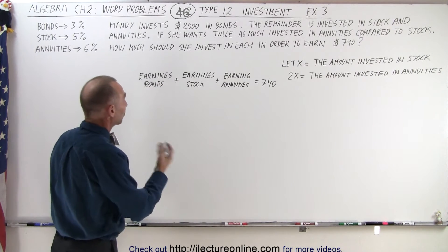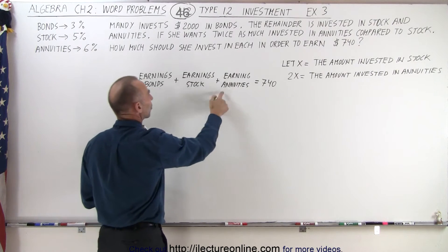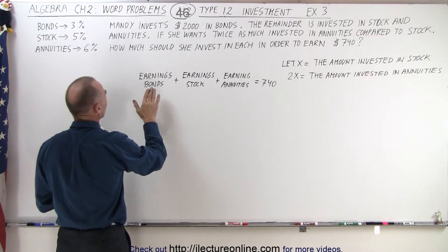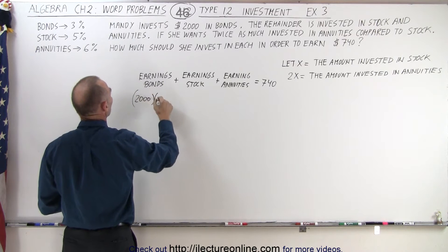So now the question is, how much in each? Well, let's now express these three things in terms of X. So the amount earning from bonds will be the amount invested times the rate.